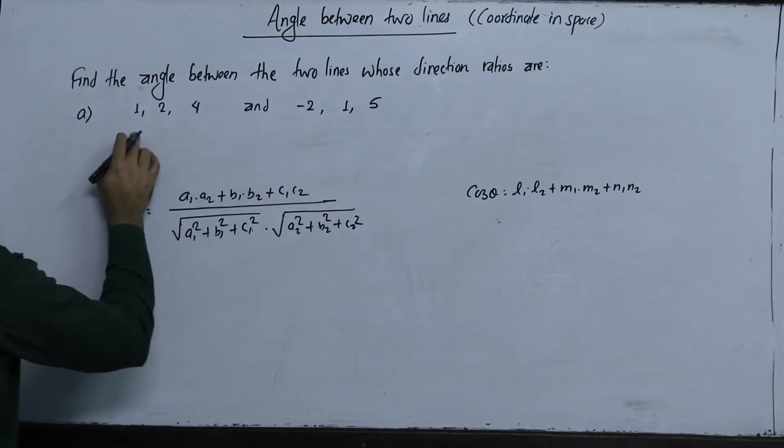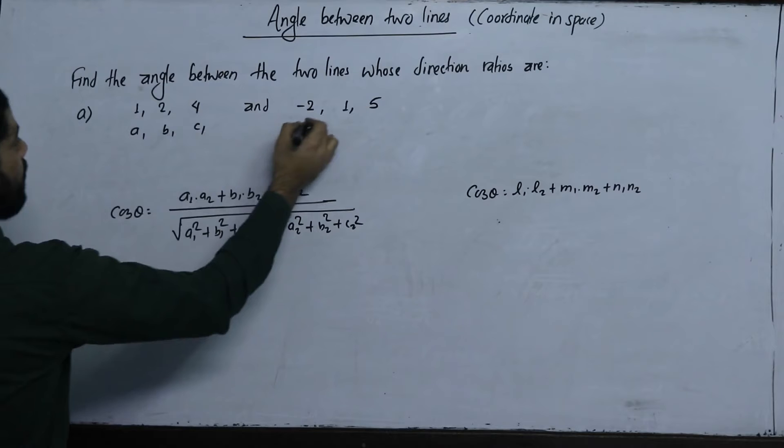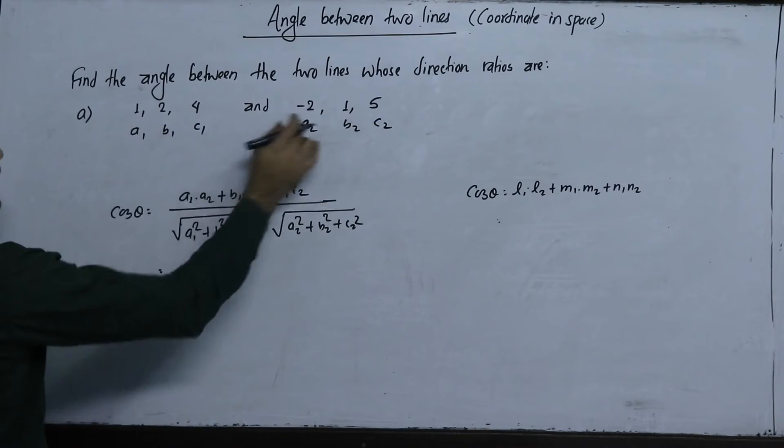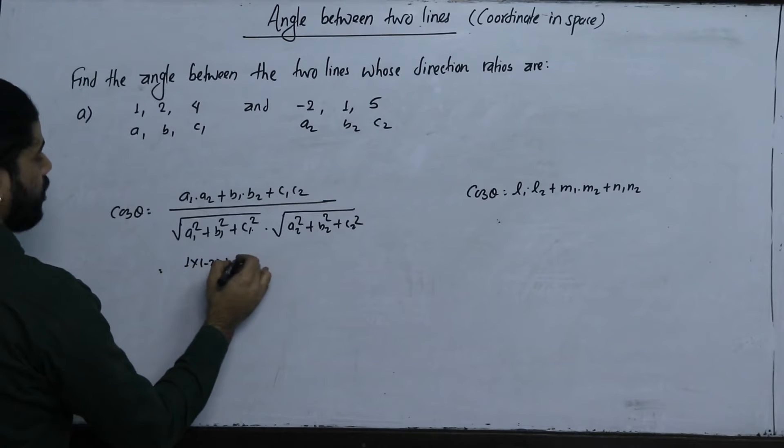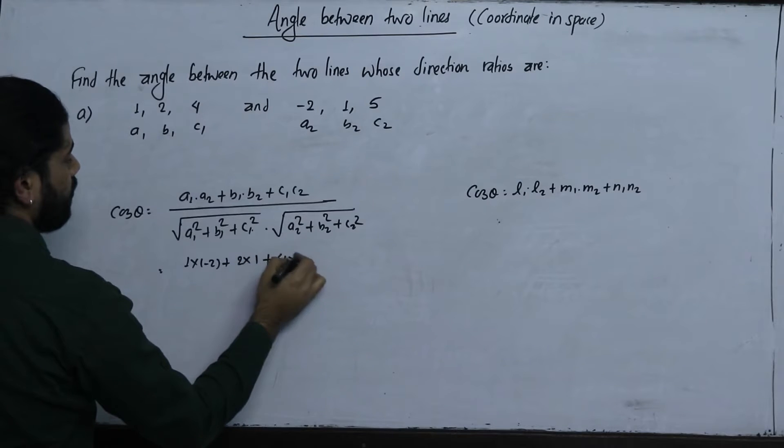Now I will find the angle between two lines. The direction ratios are a1, b1, c1 equals 1, 2, 4 and a2, b2, c2 equals minus 2, 1, 5. So cos theta equals 1 into minus 2 plus 2 into 1 plus 4 into 5.